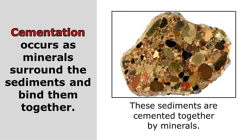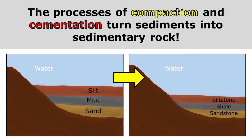Cementation occurs as minerals surround the sediments and bind them together. You can see the large pieces of sediment in this rock — these sediments are cemented together by minerals. The processes of compaction and cementation turn sediments into sedimentary rock.